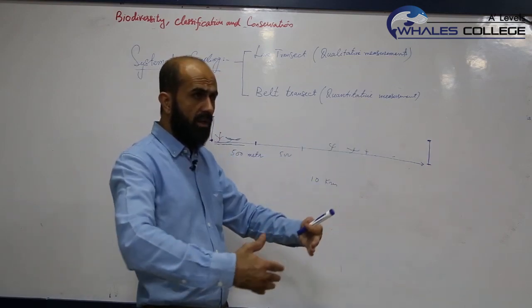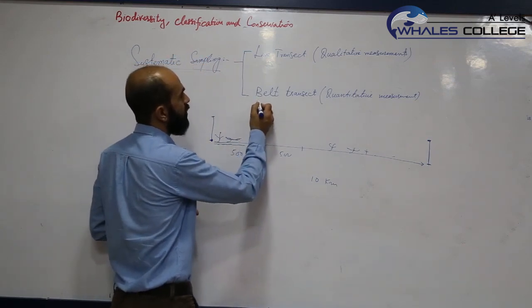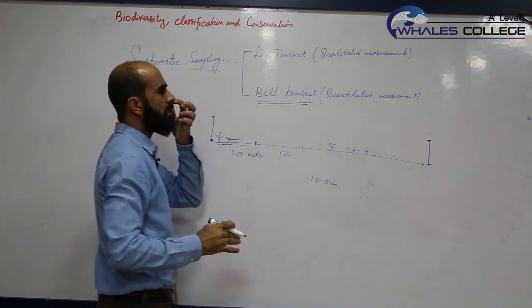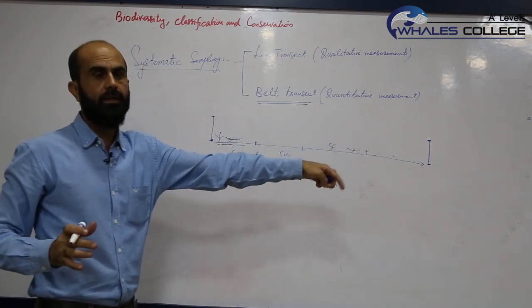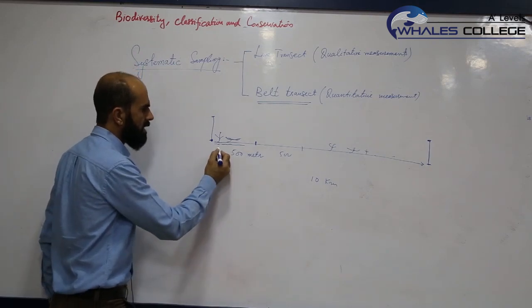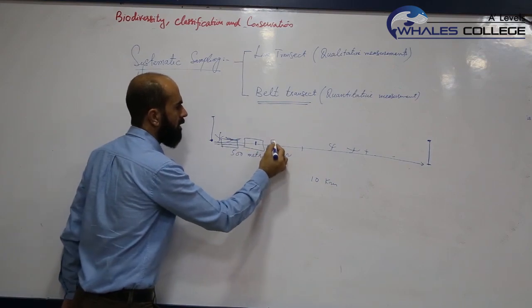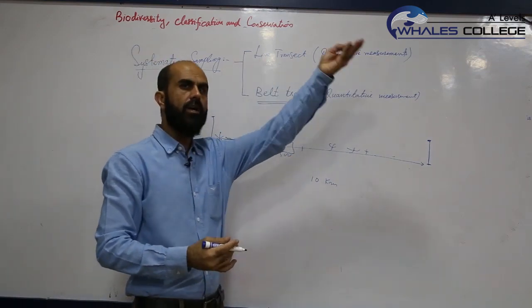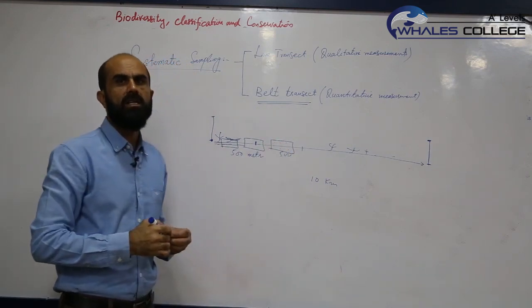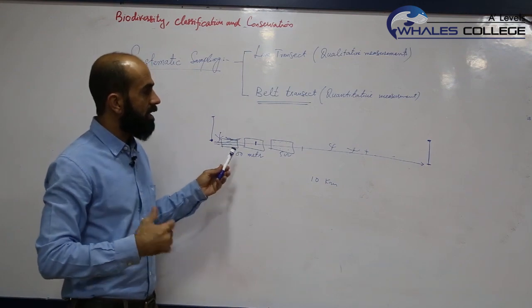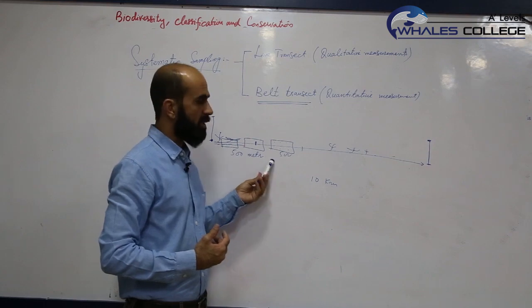This is the line transect method. Maybe in the sea as well, moving in a particular direction looking at different types of plankton and marine animals. Now what is belt transect? Belt transect is dependent on quantitative measurement. We measure the number of individuals along the particular line. We make some quadrats on the line, and in each quadrat, in the same method as we have done in random sampling, you count the species density of each organism, total abundance.